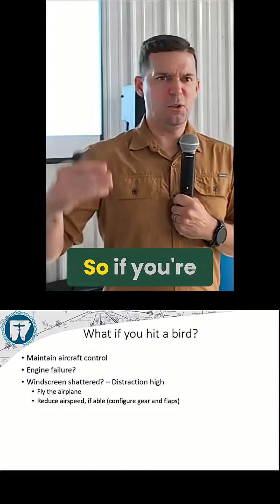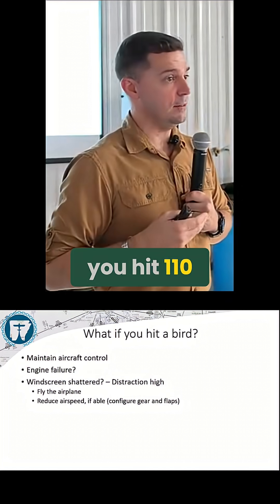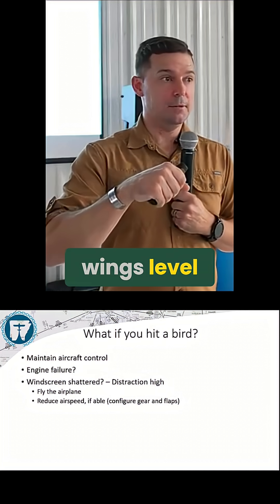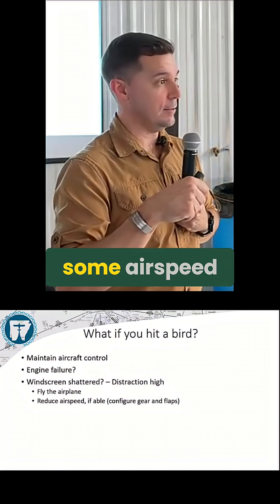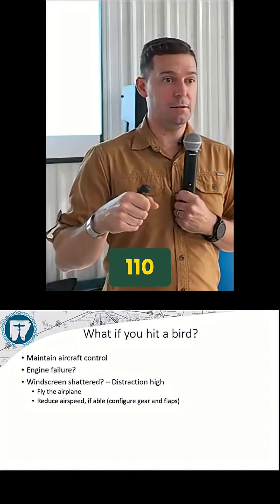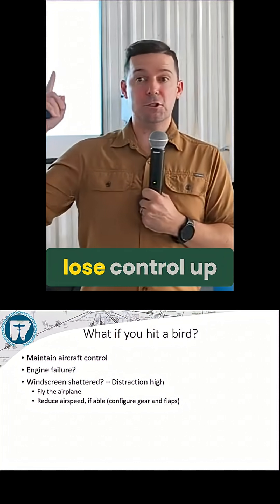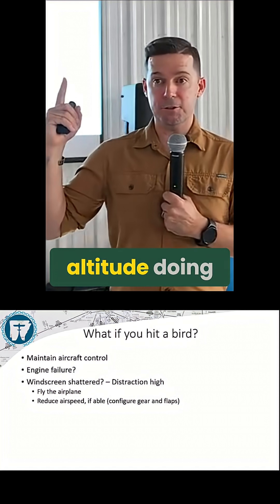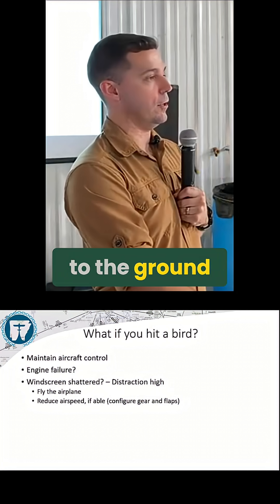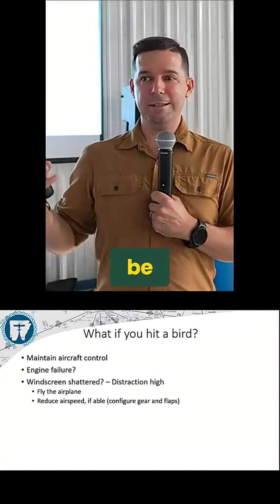Does that make sense? So if you're cruising along at 120 and as soon as you hit 110, you max out aileron and you can't maintain wings level — guess what? You've got to land at some airspeed above 110, because if you try to slow below 110, you're not going to be able to maintain aircraft control. And would you rather lose control up at altitude doing this controllability check, or lose control of the airplane close to the ground on short final? That's why we do a controllability check. Doesn't have to be anything crazy.